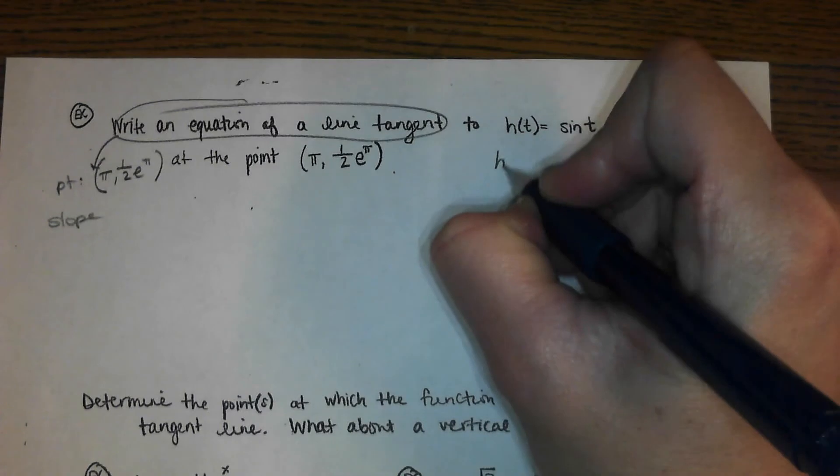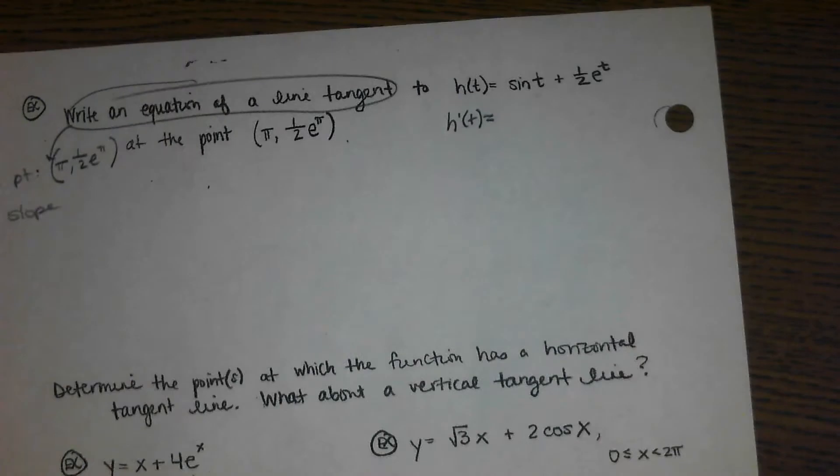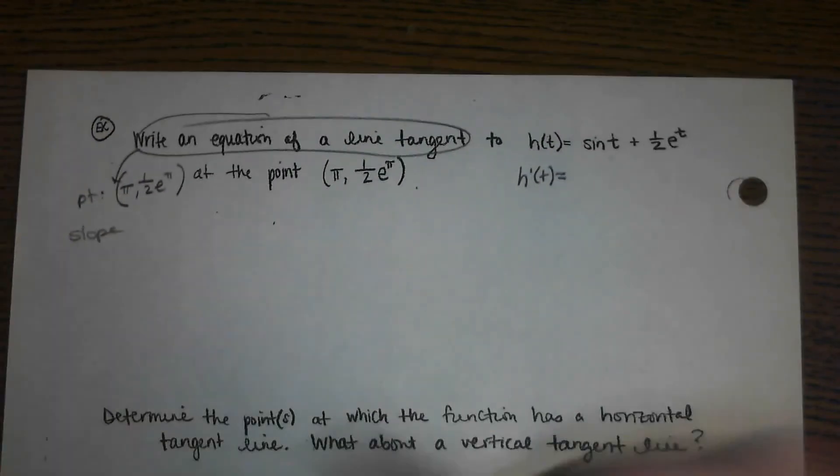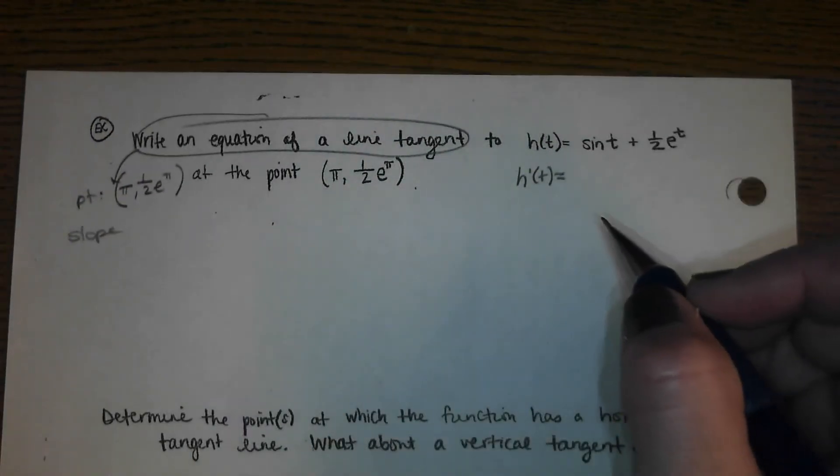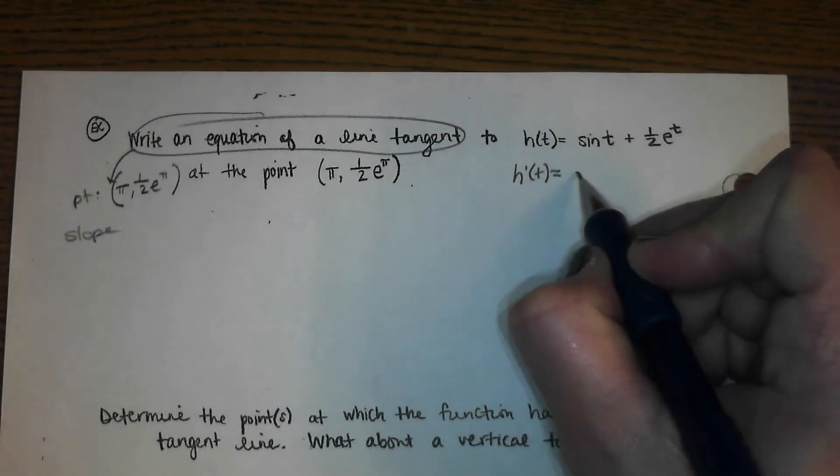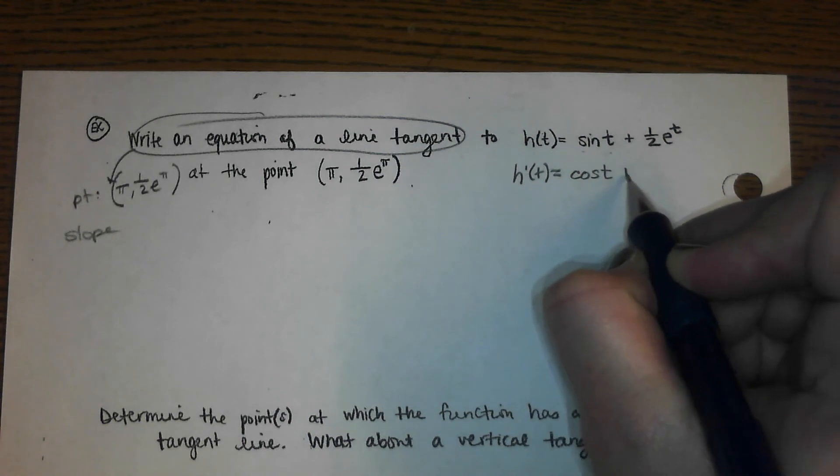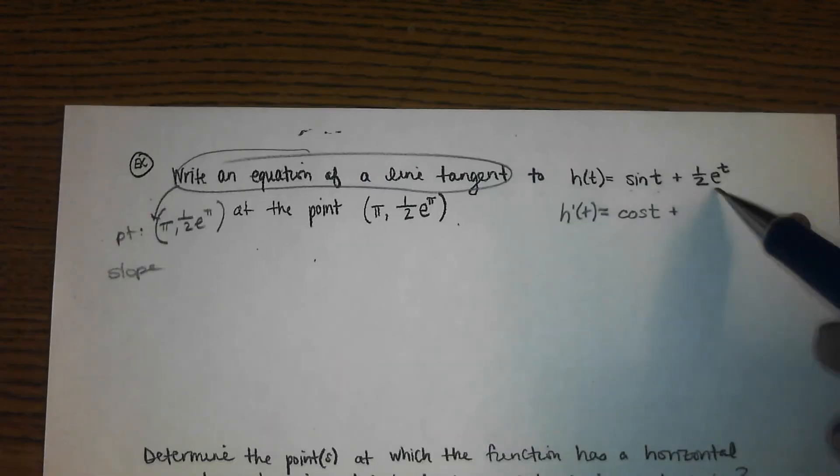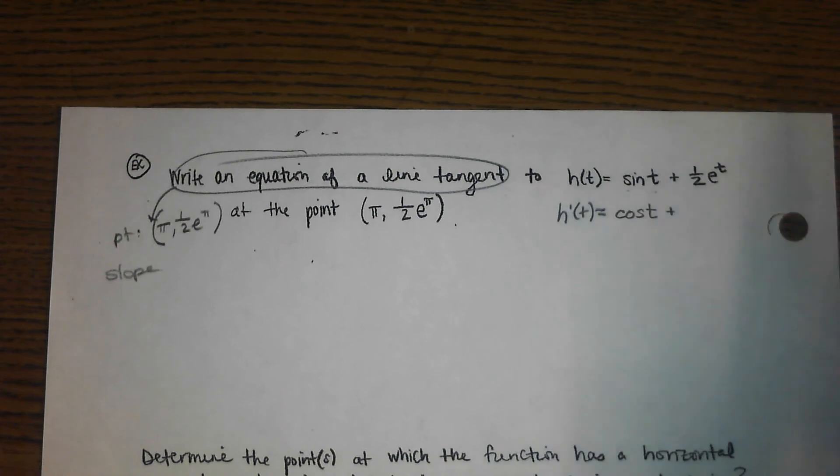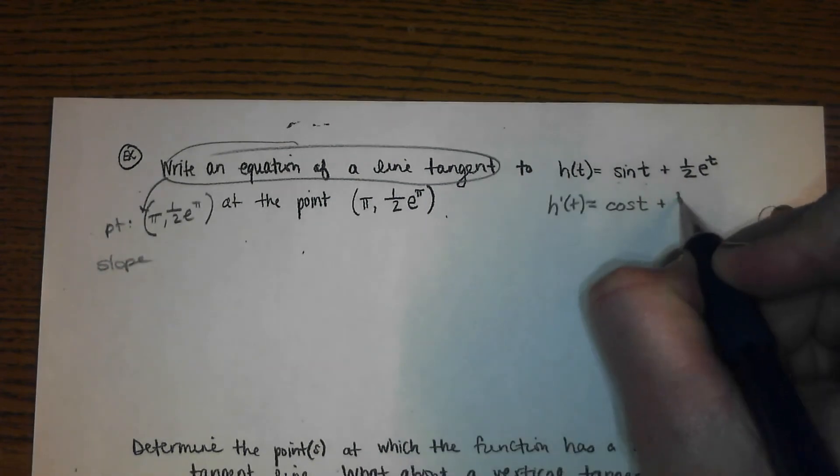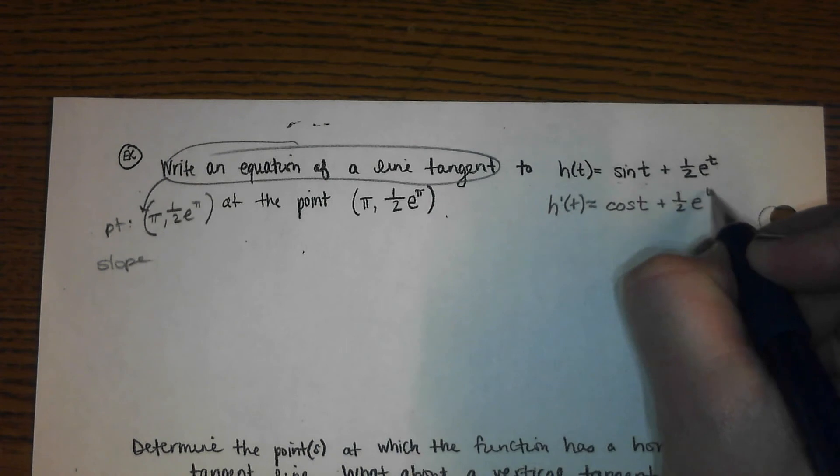So h prime of t. The derivative of sine t is cosine. Plus, and this is just an e to the x function, so it's one-half e to the t has a derivative that's just the same thing. One-half e to the t.